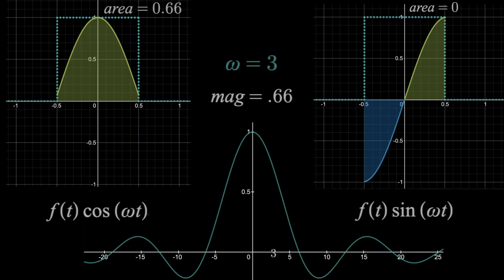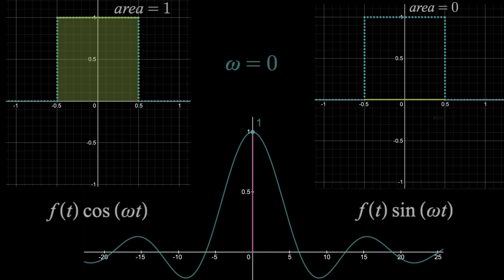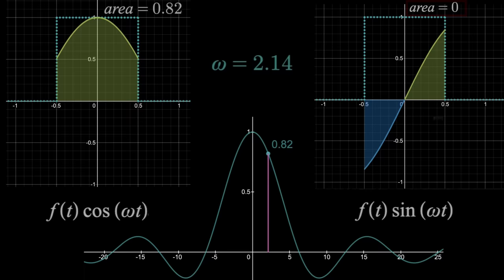So all we need to do from here is sweep omega and keep track of those associated areas, and this will get us the entire Fourier transform magnitude. By the way, notice as I rewind a bit that the graph on the right always has an area of zero. That'll be the case for even functions symmetric about the y-axis, because the positive and negative areas will always cancel when multiplied by sine of anything t. So really, we are plotting this area as a function of omega that entire time. In this case, that's really all the Fourier transform is.